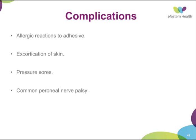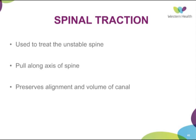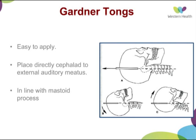Looking at specific tractions: there are spinal tractions, upper limb ones, and lower limb ones. Spinal tractions are used for treating unstable fractures — they pull along the axis of the spine and preserve the volume of the spinal canal. There are two main types of tongs: the Gardner-Wells tong, which is easy to apply and placed in line with the mastoid process, and the Crutchfield tong, which works similarly but requires incising the skin and drilling the cortex to place it.